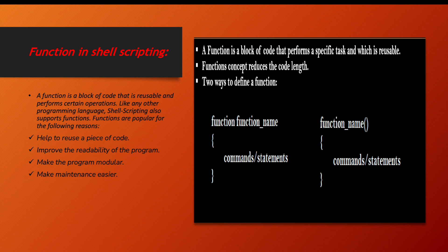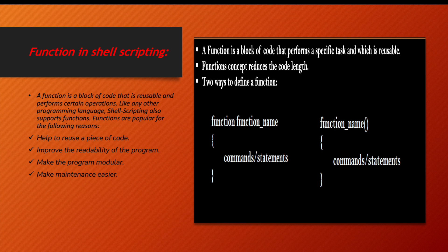There are two ways to create a function. One way is to give the function name, then a small bracket, start with curly braces, and close the curly braces — your commands go in the middle. The other way is to write the 'function' keyword, then your function name, and directly use the curly braces. I always find the first method easier: function name, then a small bracket, then curly brackets.